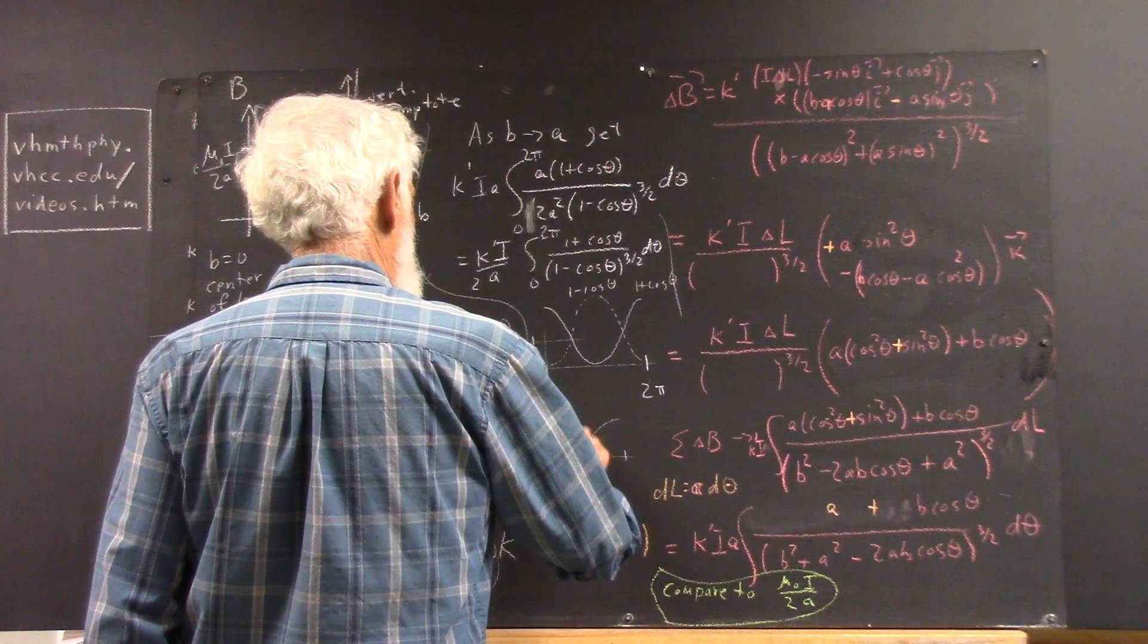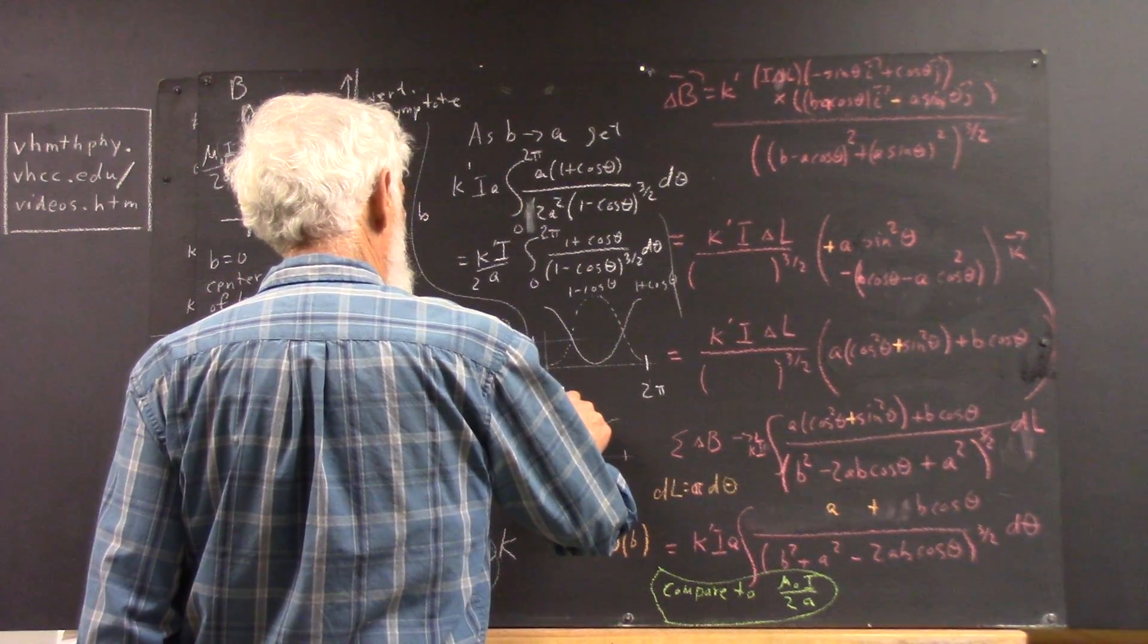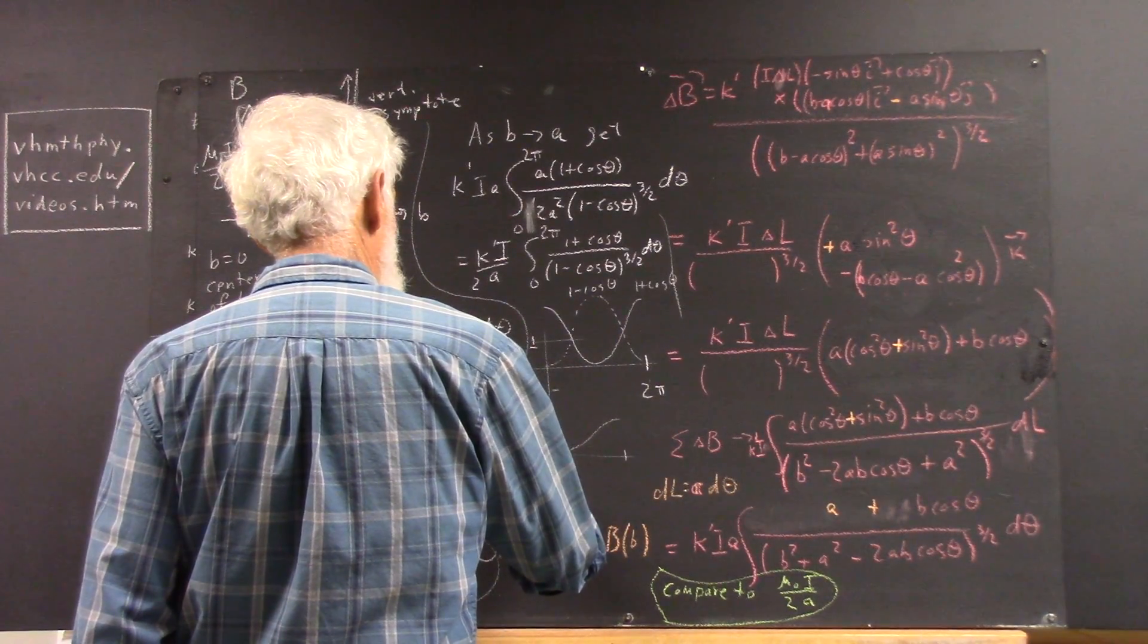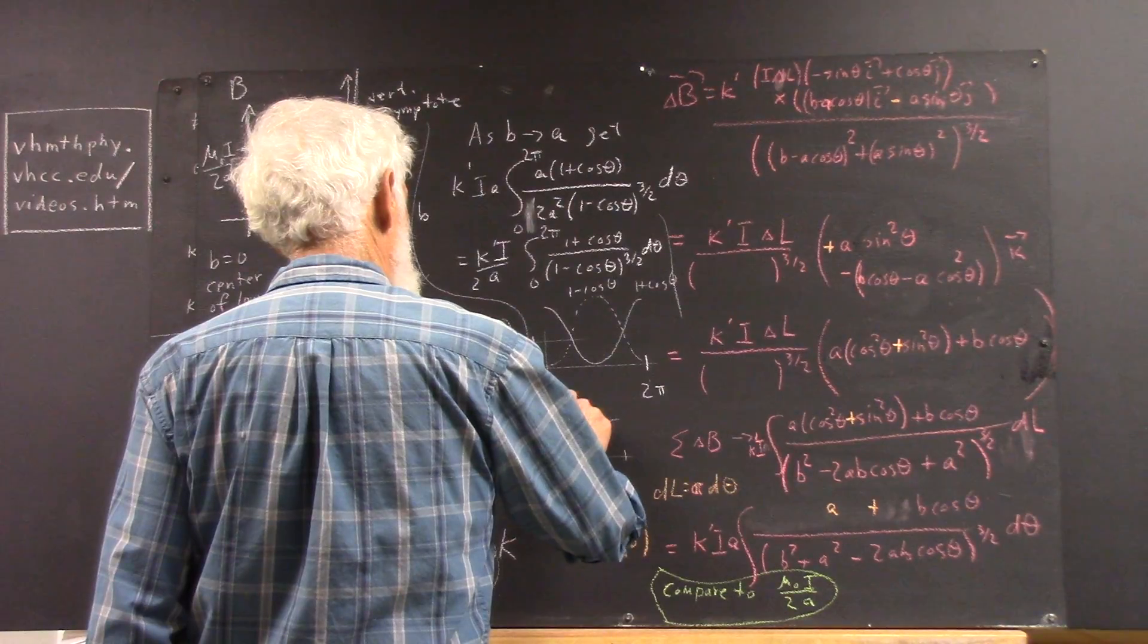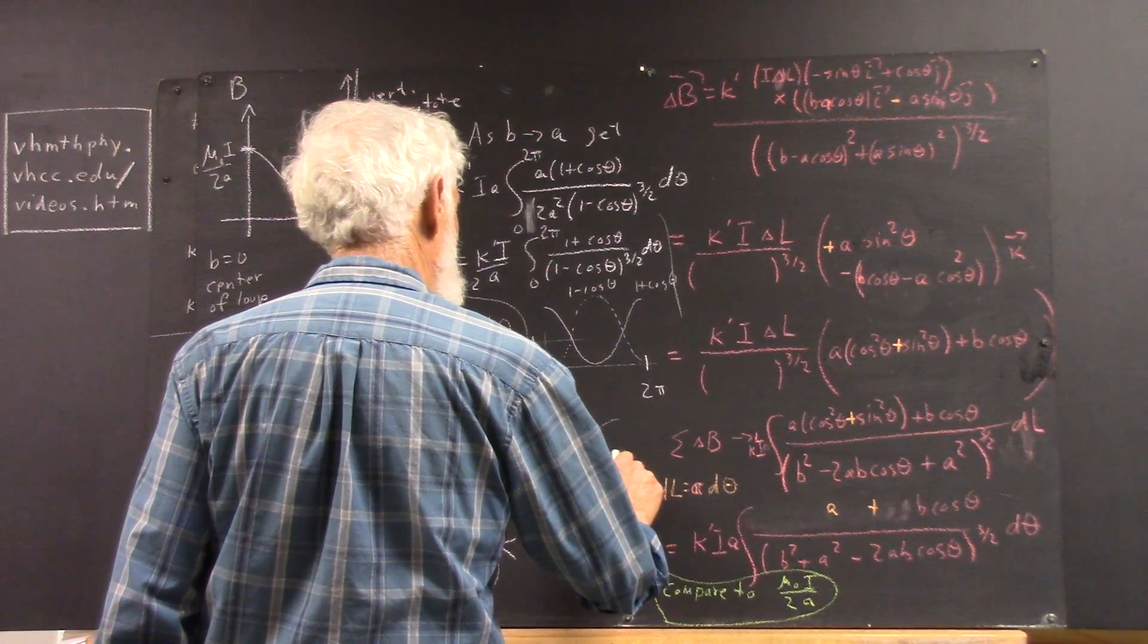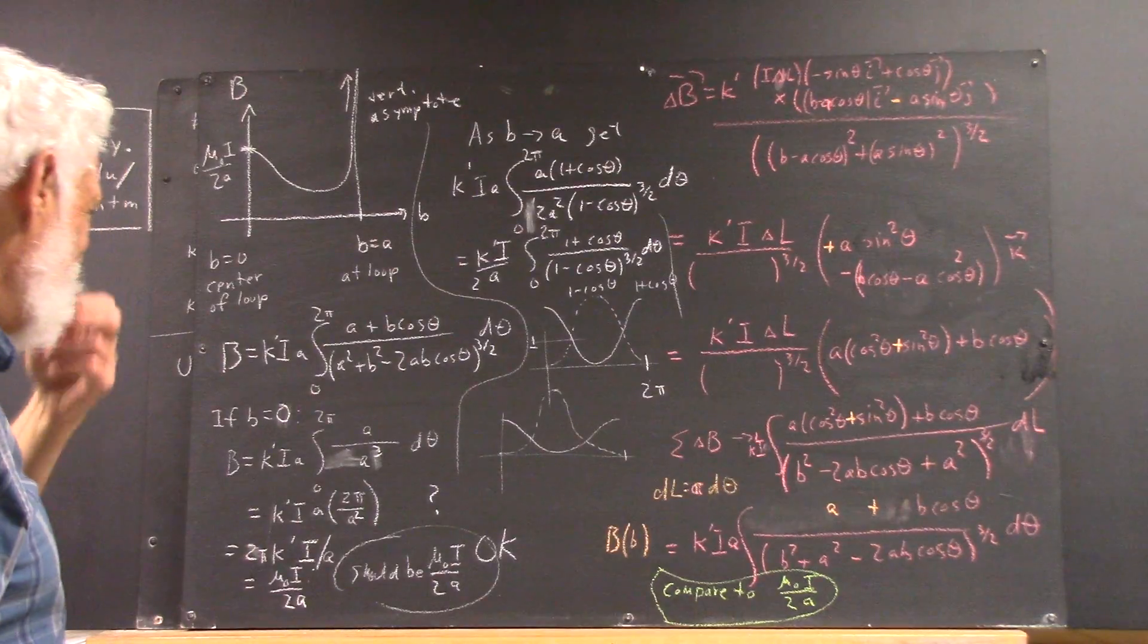So an approximate picture would be something like this, where this one comes up a little higher, but it starts out a little flatter, and it does something like this. Maybe I'm exaggerating the flatness.